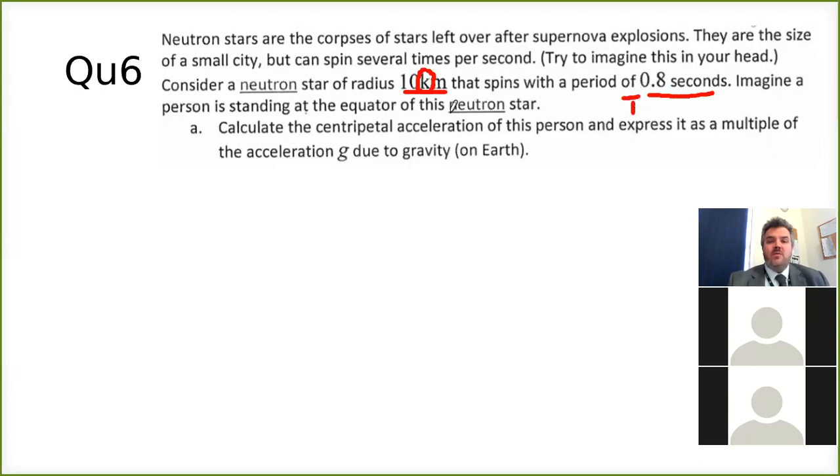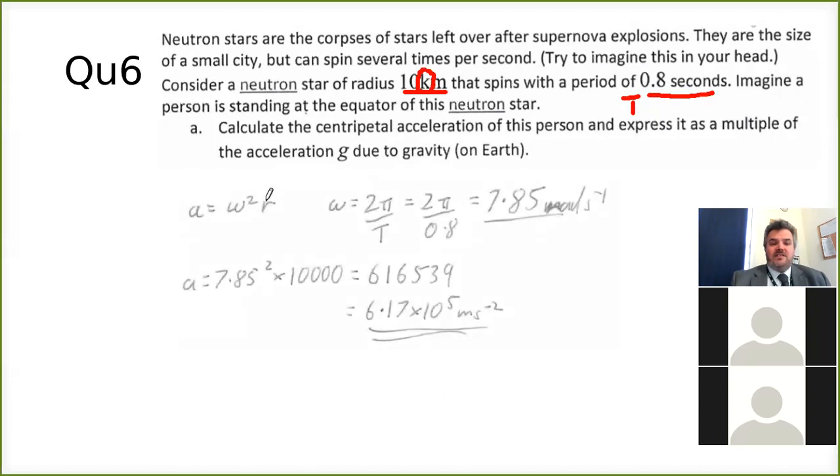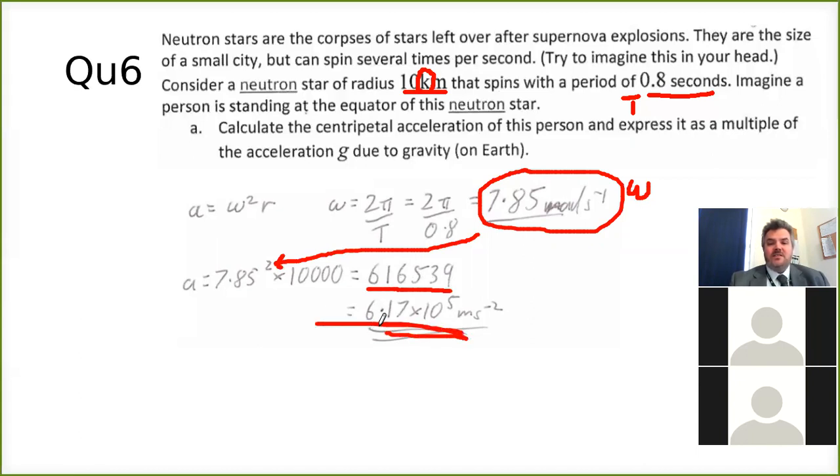So if we calculate centripetal acceleration of this person, first of all, we do exactly the same as we did before. But this time we're given the period of rotation of 0.8. So we know that the angular velocity is 7.85 radians per second. So that gives us the angular velocity, omega. So if acceleration is omega squared r, that's going to be 7.85 squared multiplied by 10,000, because you've got 10 kilometers here. So we end up with 616,539, well, round it off to two significant figures. We should end up with something like that, 6.17 times 10 to the power of 5 meters per second squared. So we have calculated the centripetal acceleration of that person.